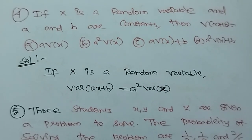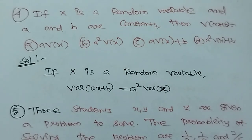If X is a random variable and a and b are constants, then the variance of aX plus b equals a-squared times the variance of X. This is a fundamental property of variance.